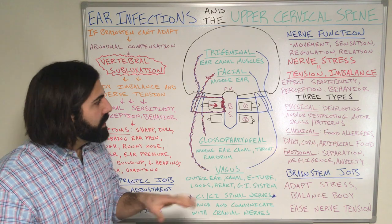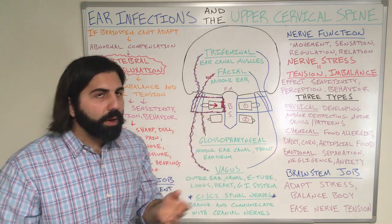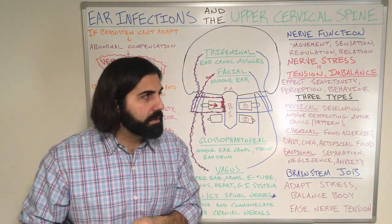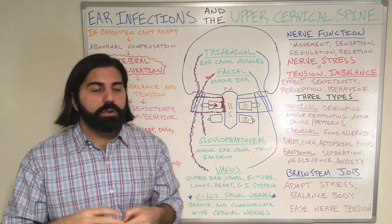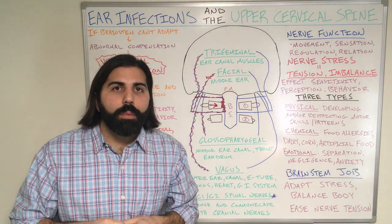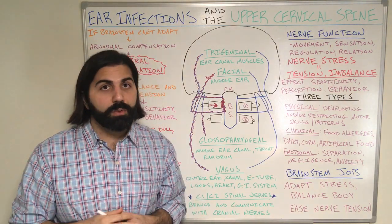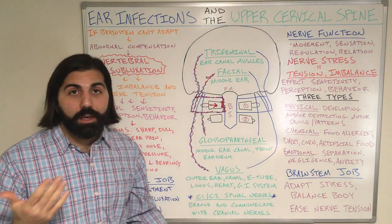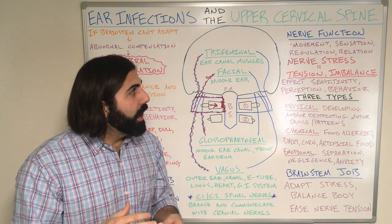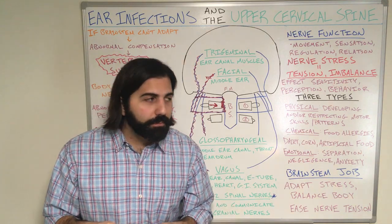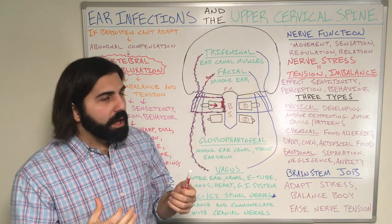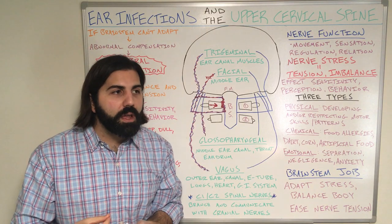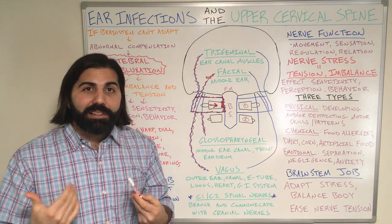What is the job or the main purpose of the nerves and the brainstem? They are both part of what we generally call the nerve system. The nerve system does four main things for our body: it controls all the movements we make, it senses everything we feel, it regulates all our body organs, glands, and tissues, and it relates us to the outside world. Now, nerves themselves can get stressed. When nerves get stressed, it creates tension on the nerves and puts an imbalance into the system.